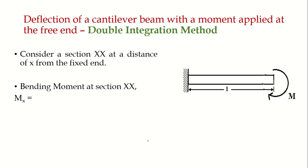In this video we will see how to calculate the deflection of a cantilever beam when a moment M is applied at the free end using the double integration method. We have a cantilever beam A-B, fixed at A and free at B, of span L, subjected to a hogging moment M at the free end.